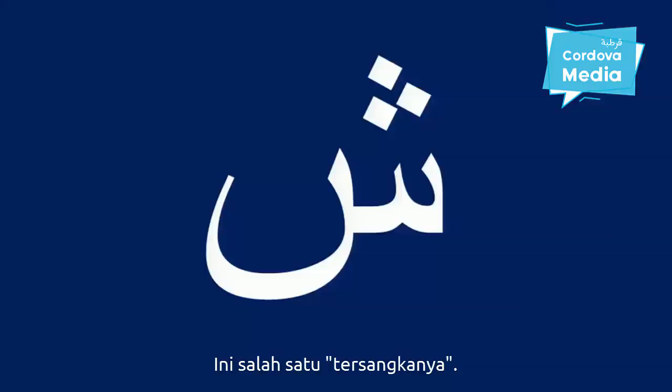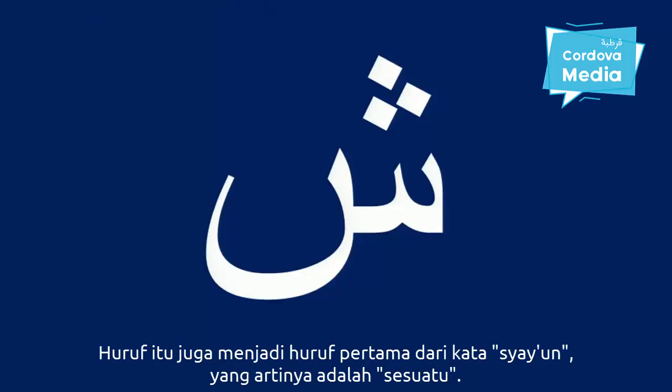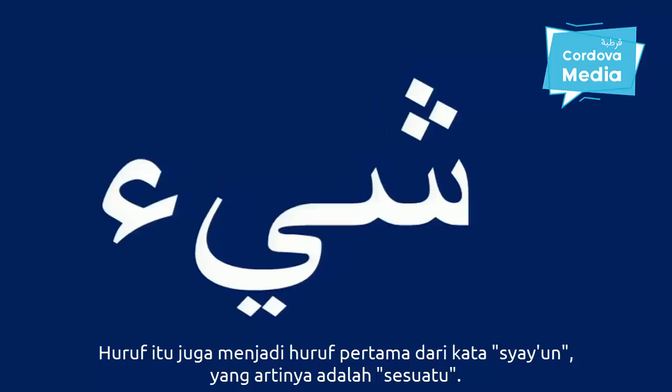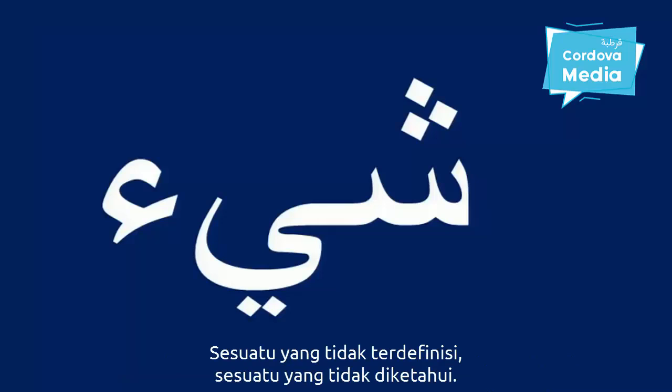Here's one of the culprits. This is the letter sheen, and it makes the sound we think of as S-H. It's also the very first letter of the word sheen, which means something — just like the English word something — some undefined, unknown thing.